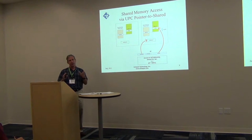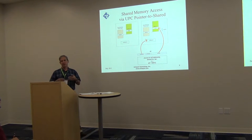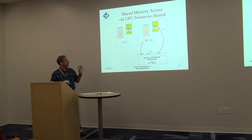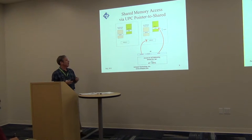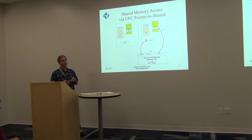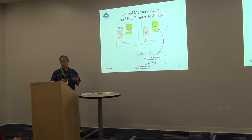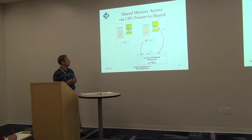One of the unique things about UPC is it generalizes or virtualizes a pointer so that it becomes a 'fat pointer' with three components. The thread component designates the thread that has affinity to the shared memory being accessed — if that thread number is your own thread, you're accessing memory local to you. The address field is better thought of as an offset into the other thread's portion of the shared address space.